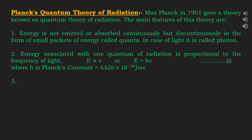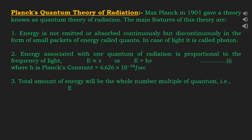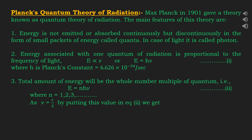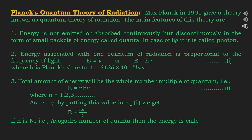Third feature: the total amount of energy will be a whole number multiple of the quantum, that is E = nhν, where n is an integer having value 1, 2, 3, and so on. As we know ν = c/λ, by putting this value we get E = nhc/λ. If the number of photons n is Avogadro's number — one mole of photons — then the energy is called one Einstein of energy.